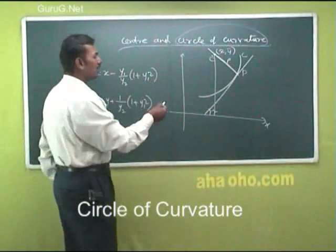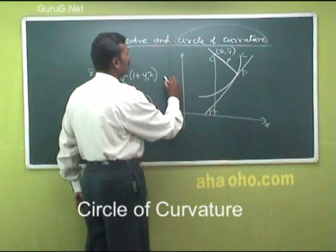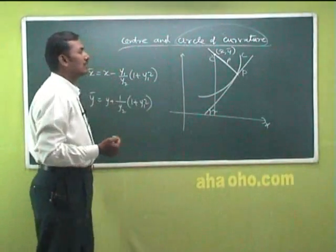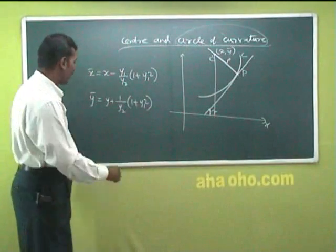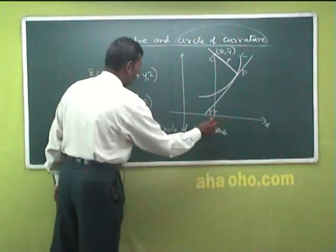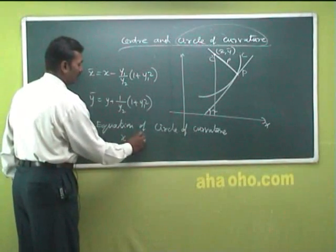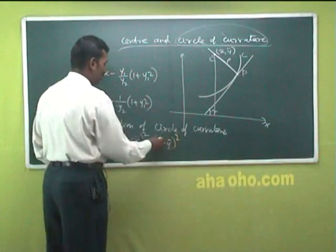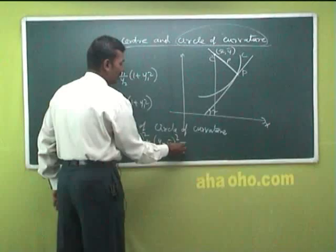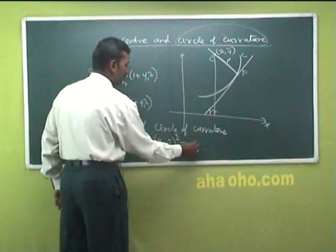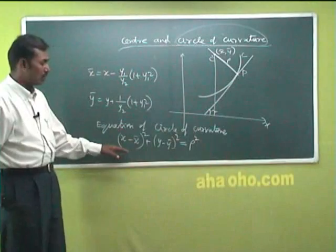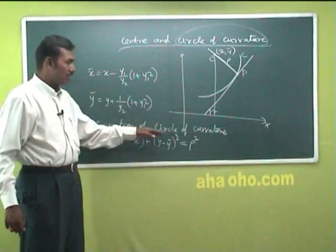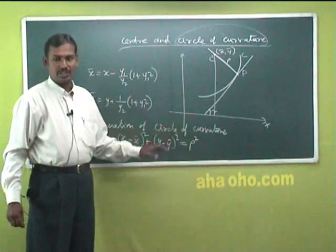Circle of curvature — imagine the curve forming a circle. The equation of the circle of curvature is: (x − x̄)² + (y − ȳ)² = ρ², where x̄ and ȳ are the center coordinates and ρ is the radius of curvature.